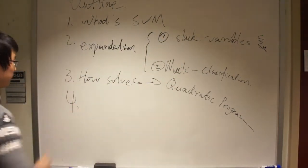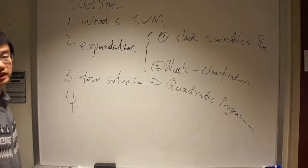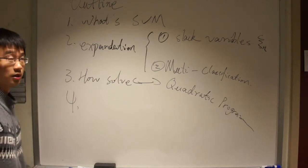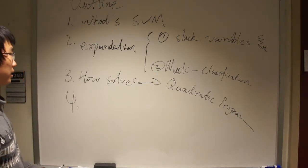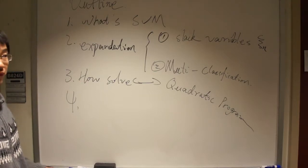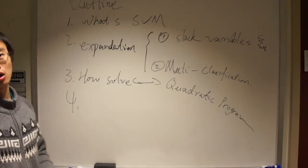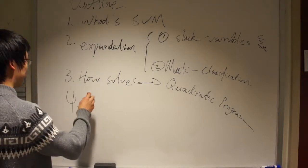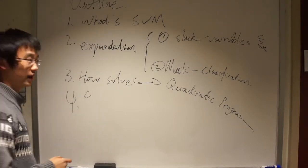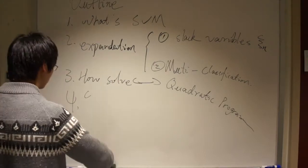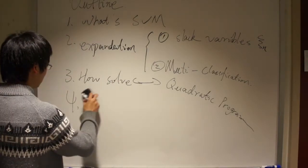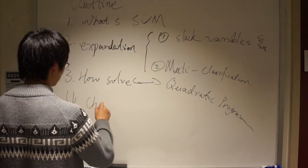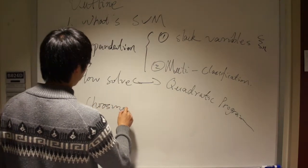The final part is about the application — specifically, when implementing in MATLAB, a very important thing is how to choose the parameters in SVM, for example the penalty parameter C and gamma in the Gaussian kernel. So this part is about choosing parameters.